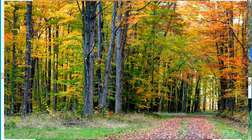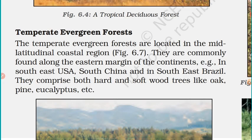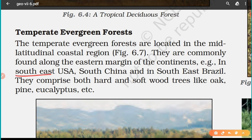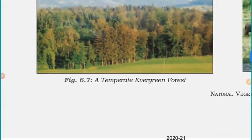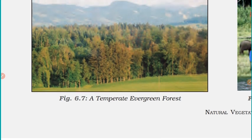Now, temperate evergreen forests. Temperate evergreen forests are located in the mid-latitudinal coastal regions. They are commonly found along the eastern margins of the continents — for example, southeast USA, south China, and southeast Brazil. They comprise both hard and softwood trees like oak, pine, and eucalyptus.